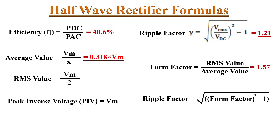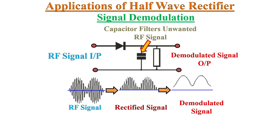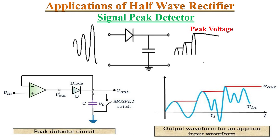We will discuss the full-wave rectifier in another video. Now let's see some applications of the half-wave rectifier. A half-wave rectifier can be used for signal demodulation of amplitude-modulated signals, as the rectification process enables the original signal to be recovered from the amplitude modulation. A half-wave rectifier can also be used as a signal peak detector for detecting the peak voltage of an incoming waveform.